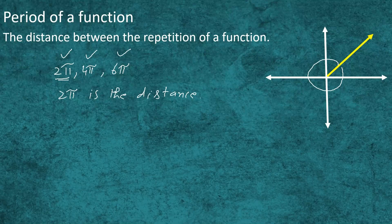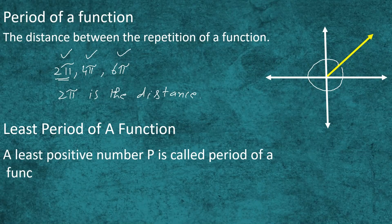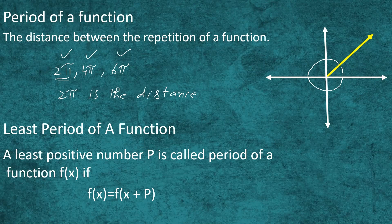Now we will define the least period of the function: the least positive number p is called the period of a function f(x) if f(x) = f(x + p). In this question, we are going to find the least period of the function.